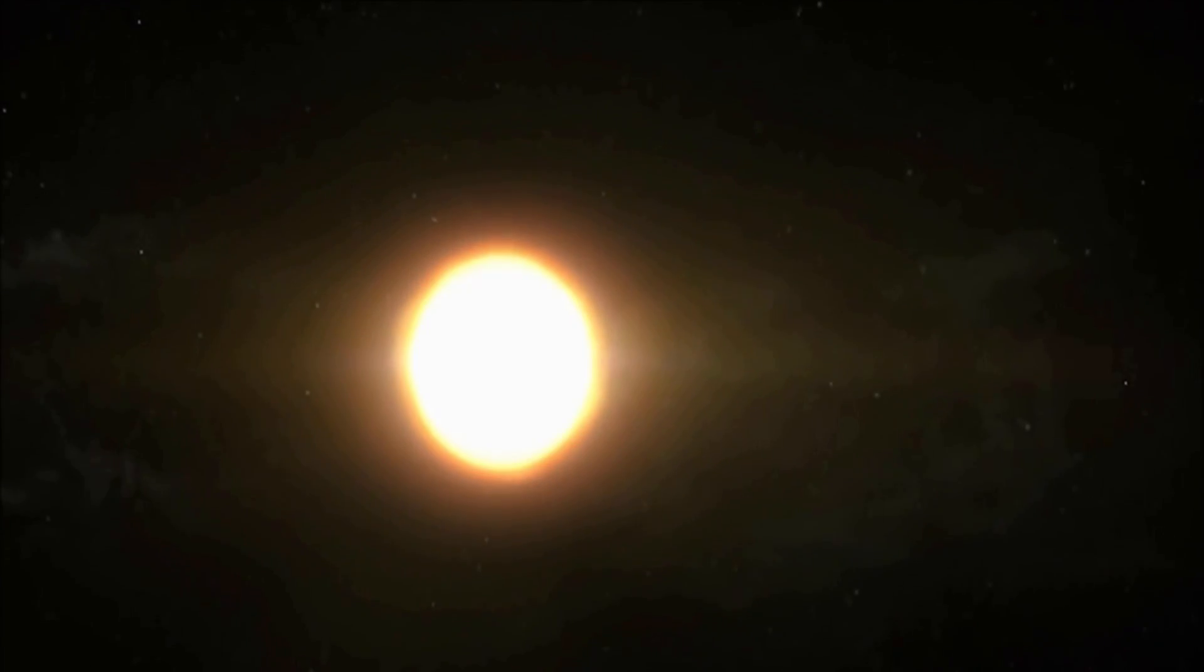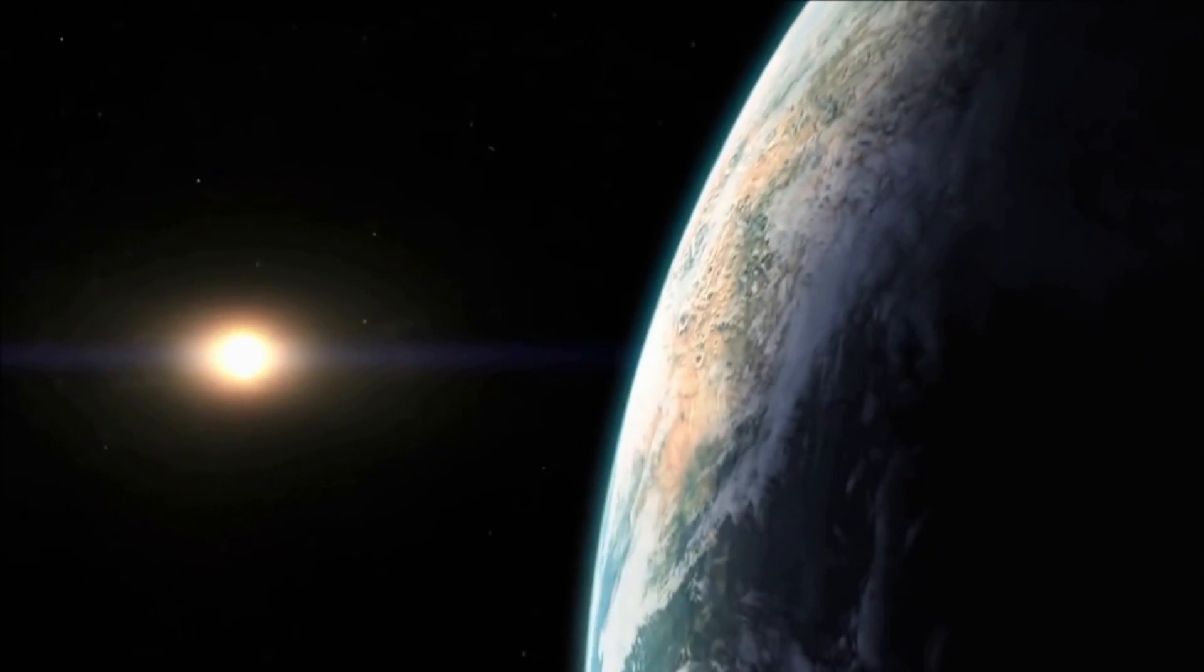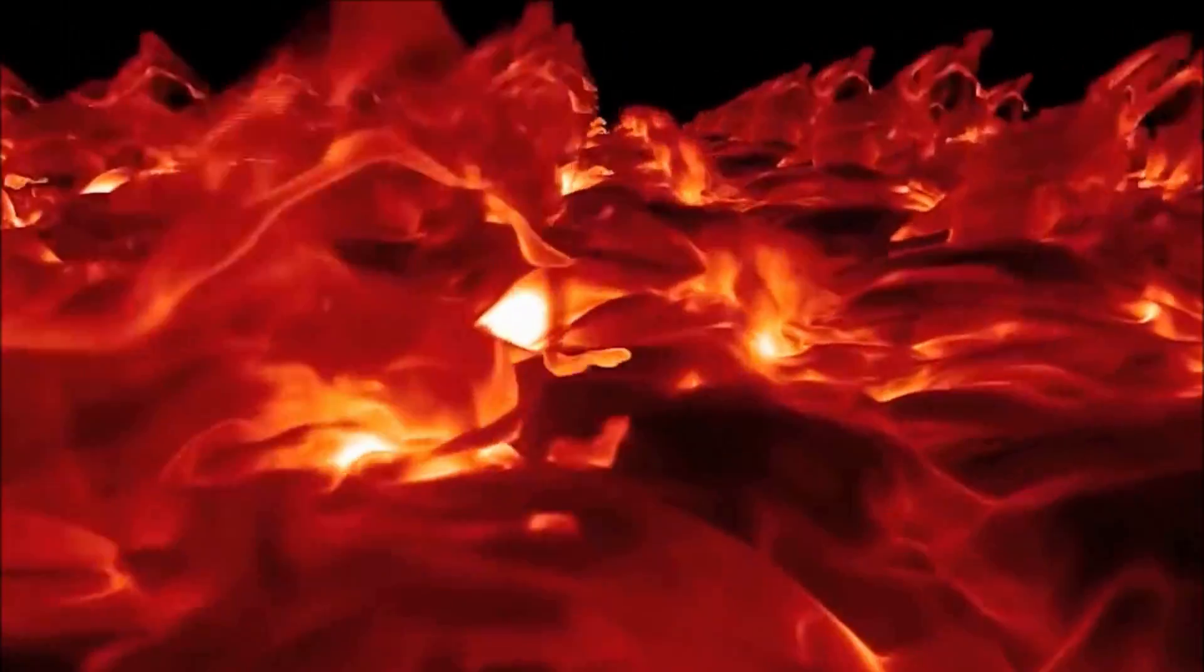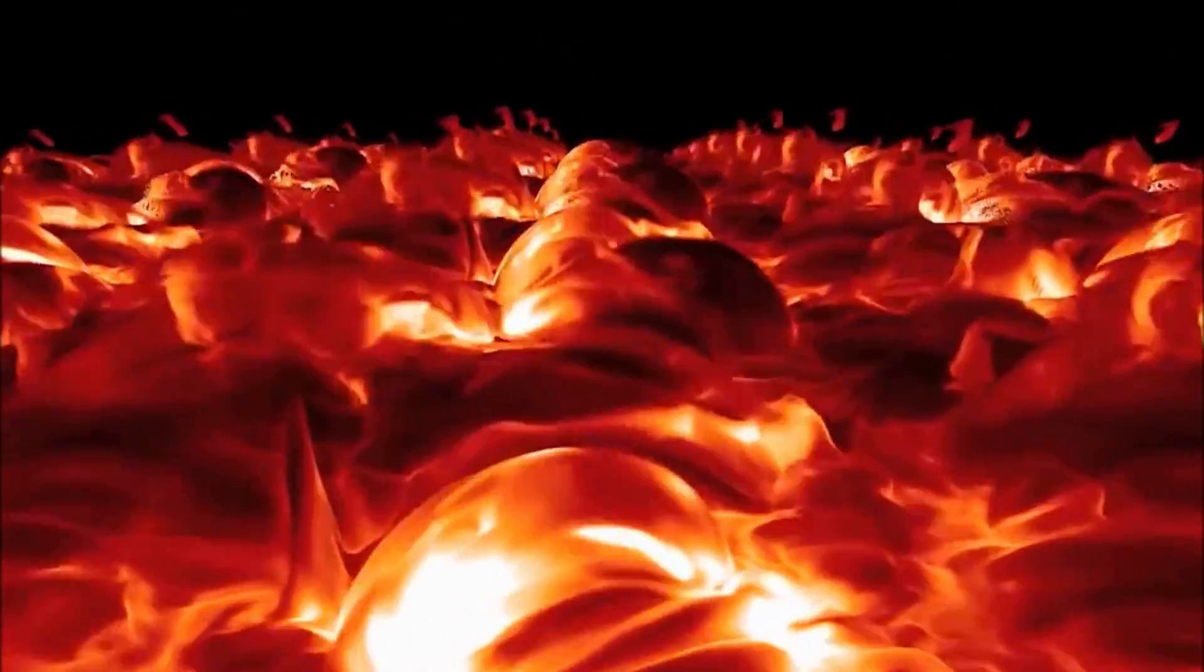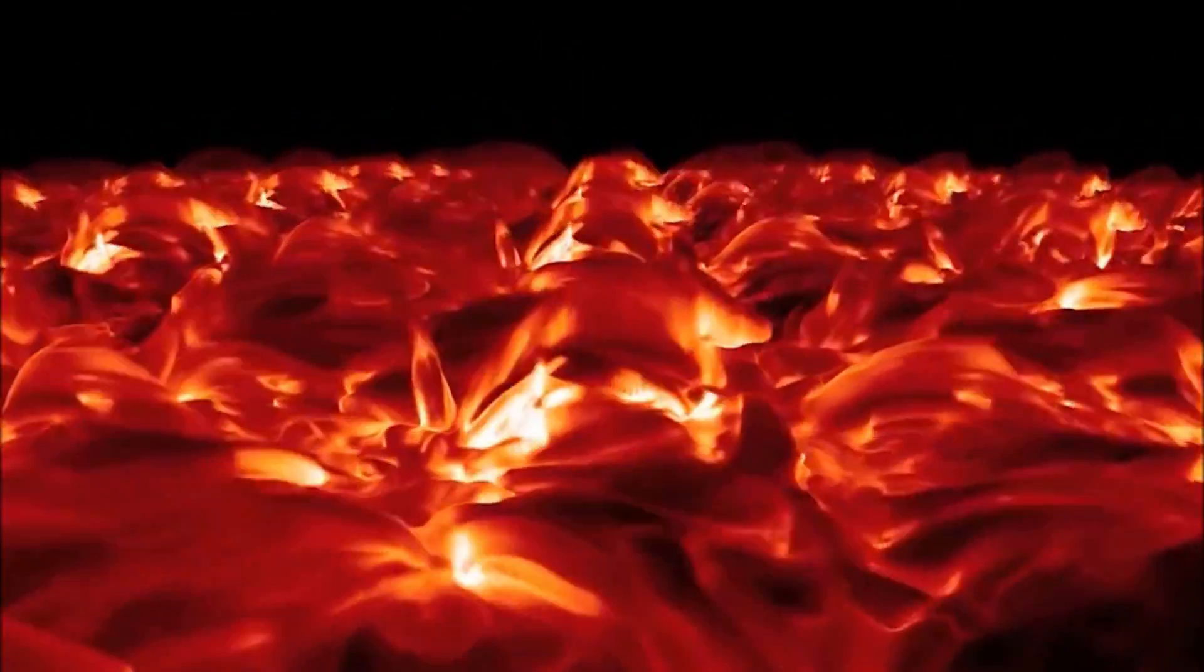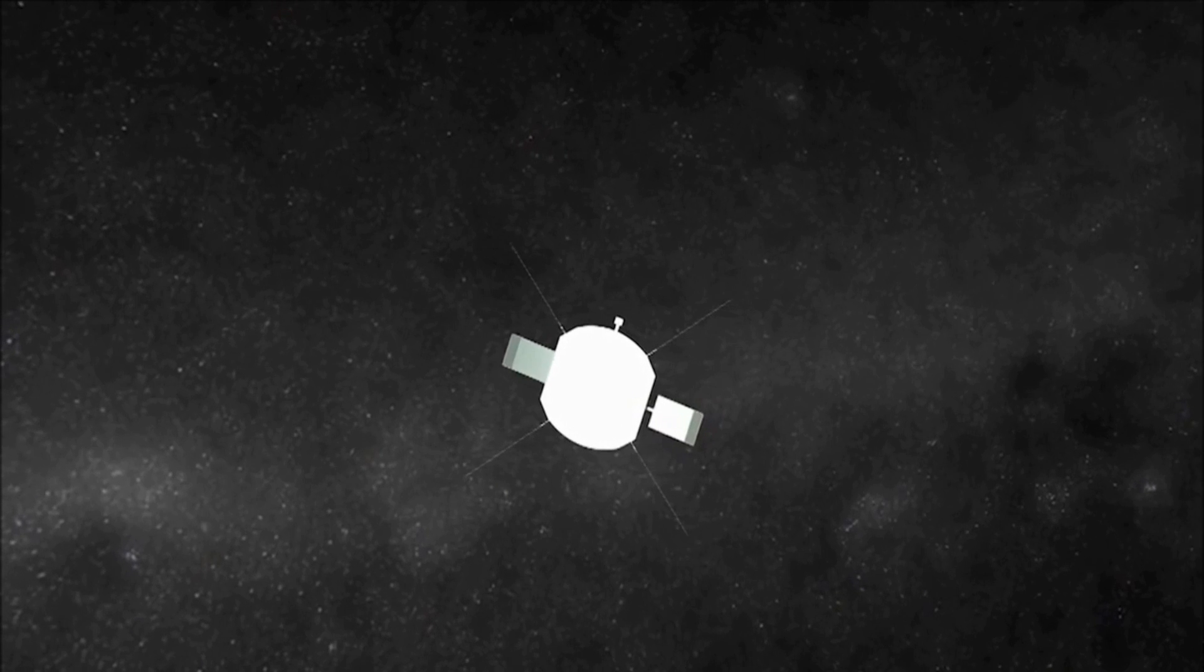With the Solar Probe Plus mission, NASA is looking to break its own record of inching ever closer to the Sun. In 1976, Helios 2, the second spacecraft to be launched by the space agency to study the Sun, flew as close as 43 million kilometers to the surface of the Sun. In contrast, NASA's new mission will get much closer to the Sun.